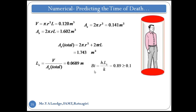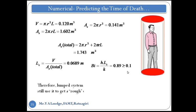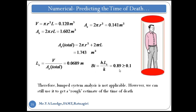Now we find the Biot number. The formula is Bi equals h times characteristic length divided by conductivity. With h equal to 8, conductivity of the body, and the characteristic length, we get a Biot number of 0.89. This is greater than 0.1, so the lump system analysis is strictly not applicable for this body. However, we still solve this numerical using lump system analysis to get a rough estimate of the time of death.